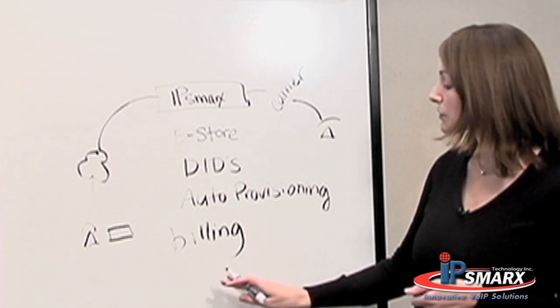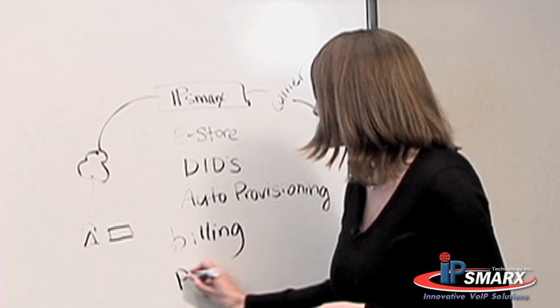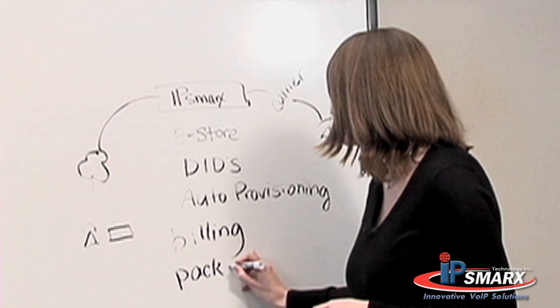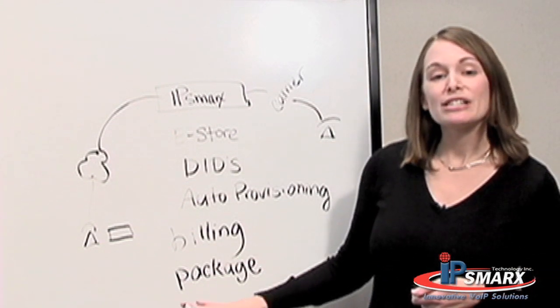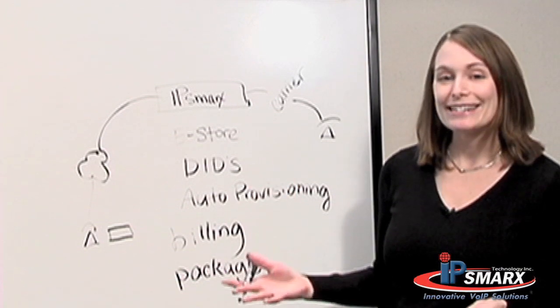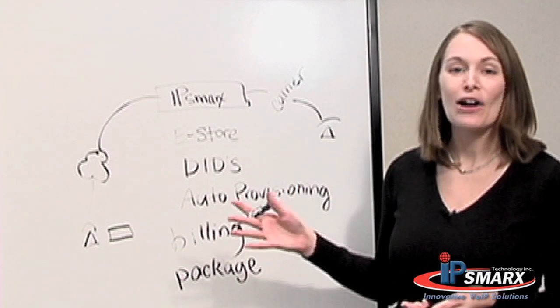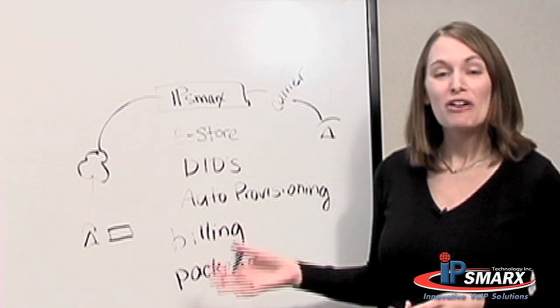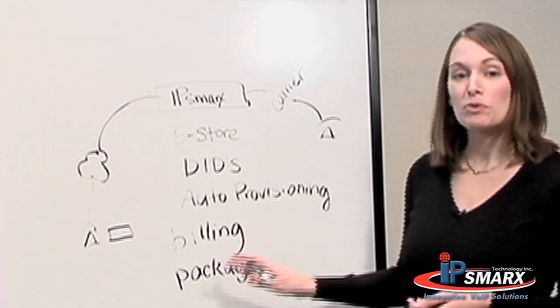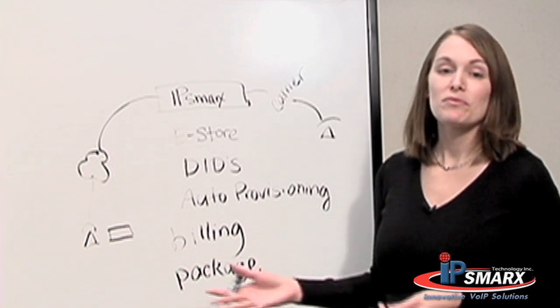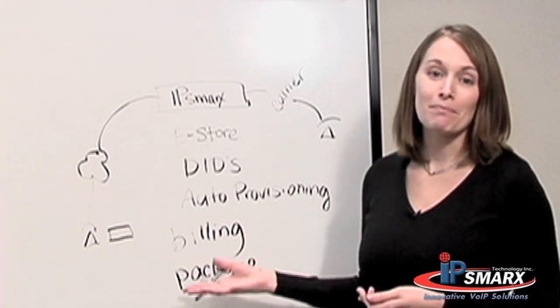With our billing solution, we also have something called package billing. This will enable you to set up a package, like $19.99 per month for unlimited calling within the US and Canada, or something along those lines. So you have the option to either bill your customer per minute, or with a package deal on a monthly rate.